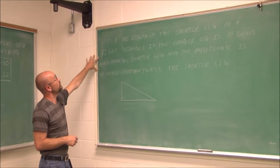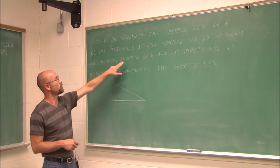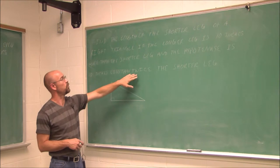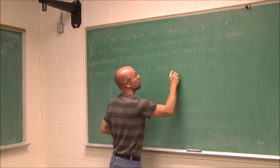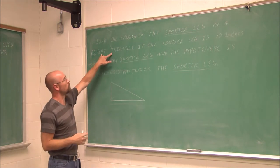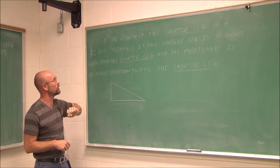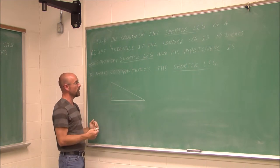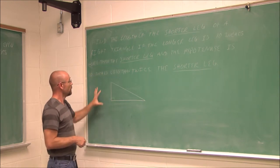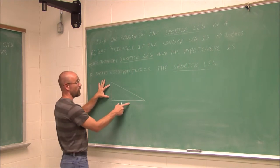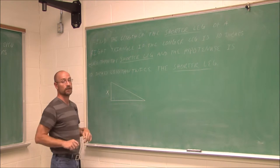Let's look at another problem: find the length of the shorter leg of a right triangle if the longer leg is 10 inches more than the shorter leg, and the hypotenuse is 10 inches less than twice the shorter leg. I've seen 'shorter leg' appear three times, so I'll underline that. Drawing a right triangle, I'll label the shorter leg x, the longer leg x plus 10, and the hypotenuse 2x minus 10.